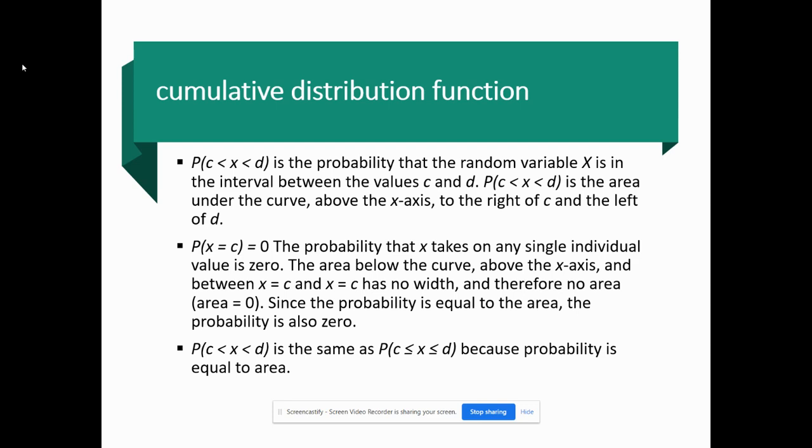P(c < x < d) is the same as P(c ≤ x ≤ d) because the probability is equal to that area. That was so different in binomial - you put that equal sign and it changed how you read it. For cumulative distribution functions, it doesn't matter. This is for continuous variables.